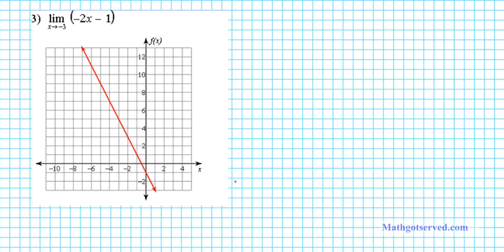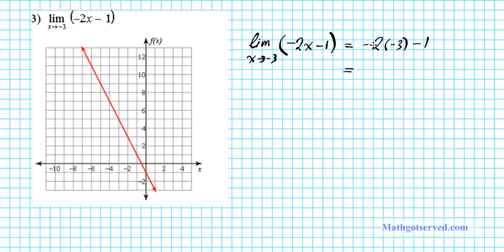Alright, let's take a look at question 3. This is a linear function that we're looking at. So let's evaluate the limit by direct substitution and then confirm our answer graphically. The limit as x approaches negative 3 of negative 2x minus 1 — by direct substitution, we substitute the value x is approaching into the function. So this is going to be negative 2 times negative 3 minus 1. Using order of operations: negative 2 times negative 3 is positive 6, and positive 6 minus 1 gives a final answer of positive 5. So there's your limit.